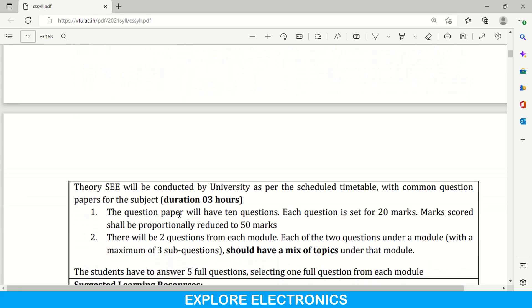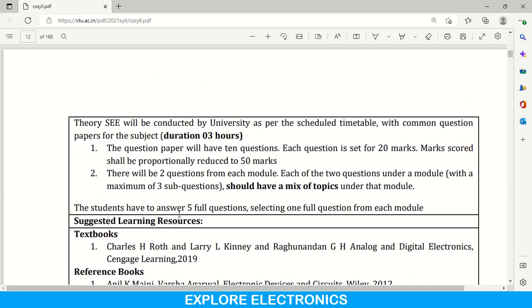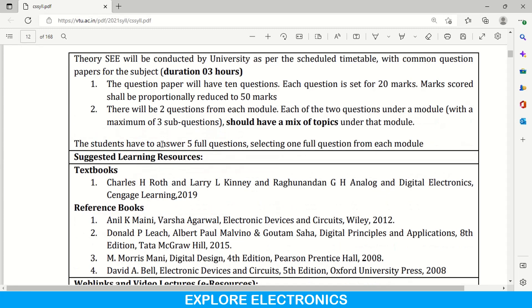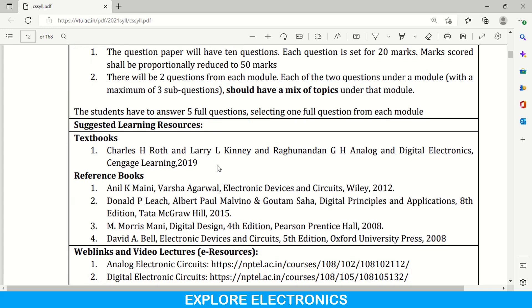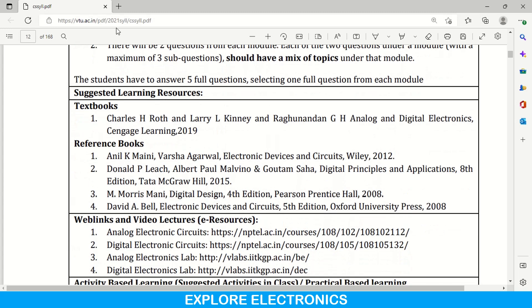And coming to semester end examination, as you know, 20 marks questions will be there from each module, you will be having choices and students have to answer five full questions selecting one full question from each module. This is what given about CIE in the syllabus book. You can refer this syllabus copy with this VTU link. You can go and download this PDF for your reference.